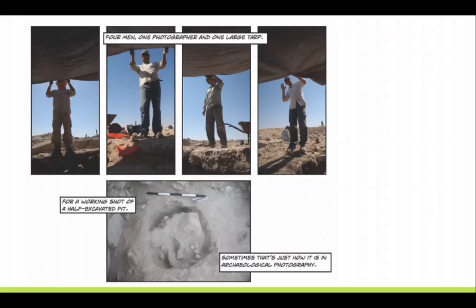I like to use this as a demonstration of taking a record shot. Often you have to use a tarp to cover where you're photographing, so you can have even light, especially in very sunny, hot places like where I like to work. And so what I did is I climbed into this trench, I took photographs of everybody holding up this tarp, and then I took a photograph of the pit. It's only half excavated. It wasn't even used really within the archive, but we went to all this trouble just to make sure that the photograph looked all right.